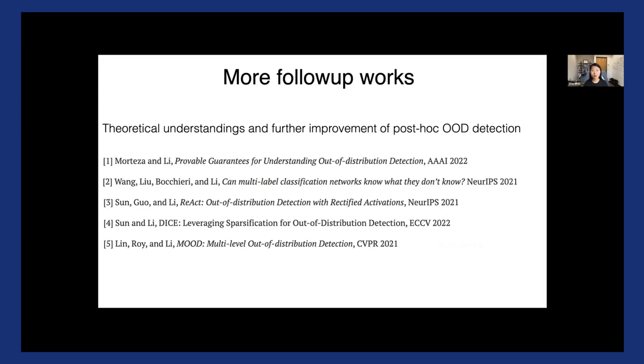And this paper has led to a series of follow-up papers as well. For the time being, I won't go into the details, but I just wanted to show some of the high-level connection and the summary. For example, we provided provable guarantees of energy score in the first paper listed here by Payman. And we also showed that energy can be extended to other learning tasks beyond multi-class classification, such as multi-label classification, when each image can have multiple ground-truth labels. And there are other follow-up works which showed, for example, using rectified activation and sparsification can further improve the performance of energy score. So if you're interested, feel free to check the works out.